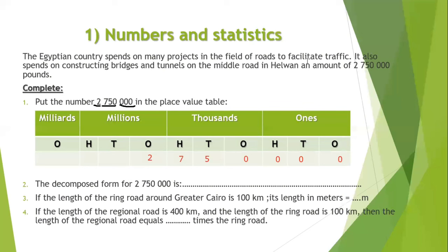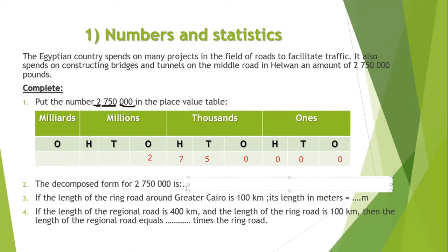Number 2: the decomposed form of 2,750,000. I write the value of each digit. The value of 2 is 2 in 1 million, so its value is 2,000,000. The value of 7 is 7 in hundreds of thousands, so its value is 700,000. The value of 5 is 5 in 10,000, so its value is 50,000. The zeros have no value so we don't need to write them.